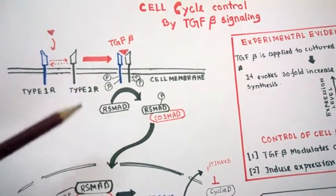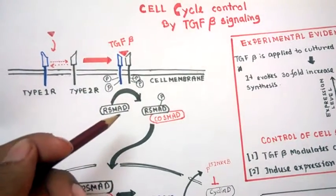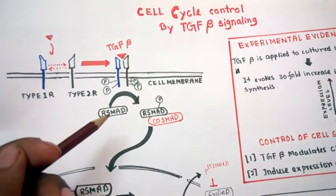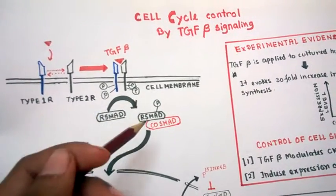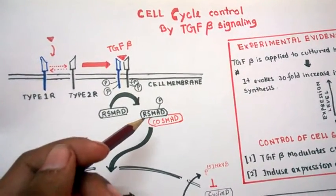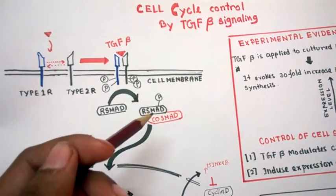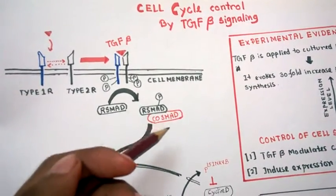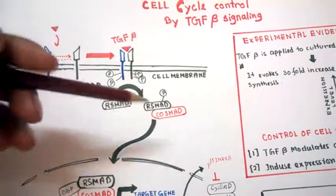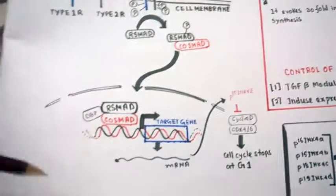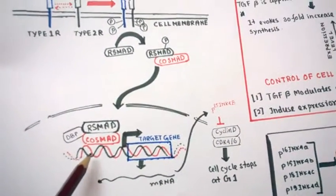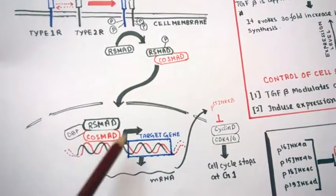This RSMAD binds with its partner COSMAD and they migrate to the nucleus, where it attaches with a DNA binding partner and sits on the promoter of a target gene.